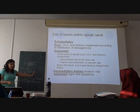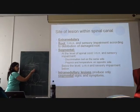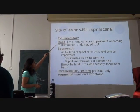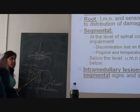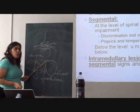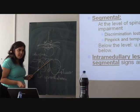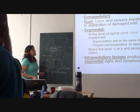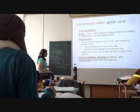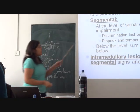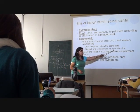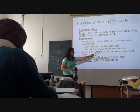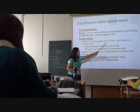A lesion within the spinal cord can be intramedullary — inside — or extramedullary — outside. It can also be intradural or extradural. If you damage the spinal nerve root, it is a lower motor neuron damage — a peripheral paralysis — at the level of the spinal cord. But below the spinal cord it is upper motor neuron. At the segmental level, discrimination is lost on the same side, while pain and temperature are lost on the opposite side.